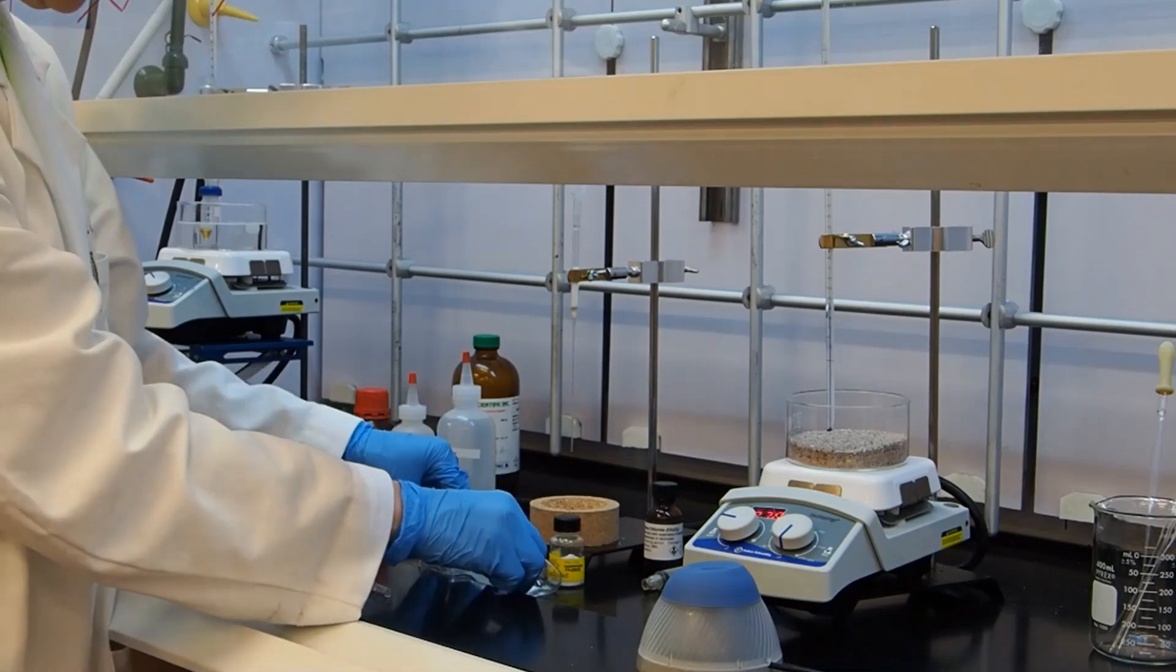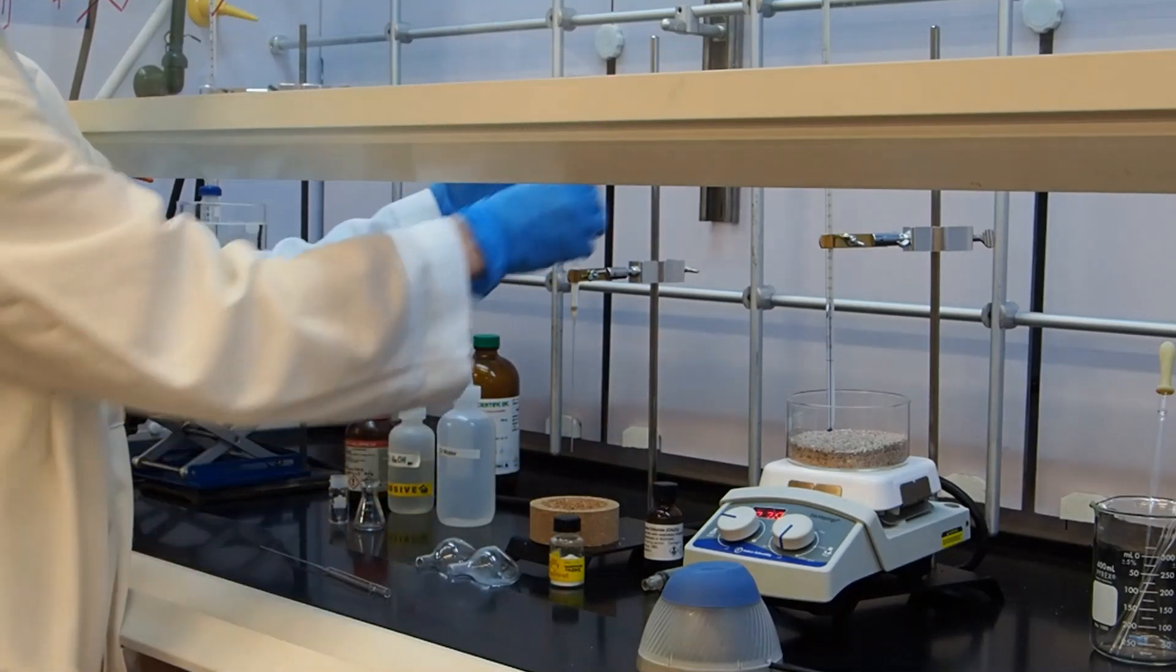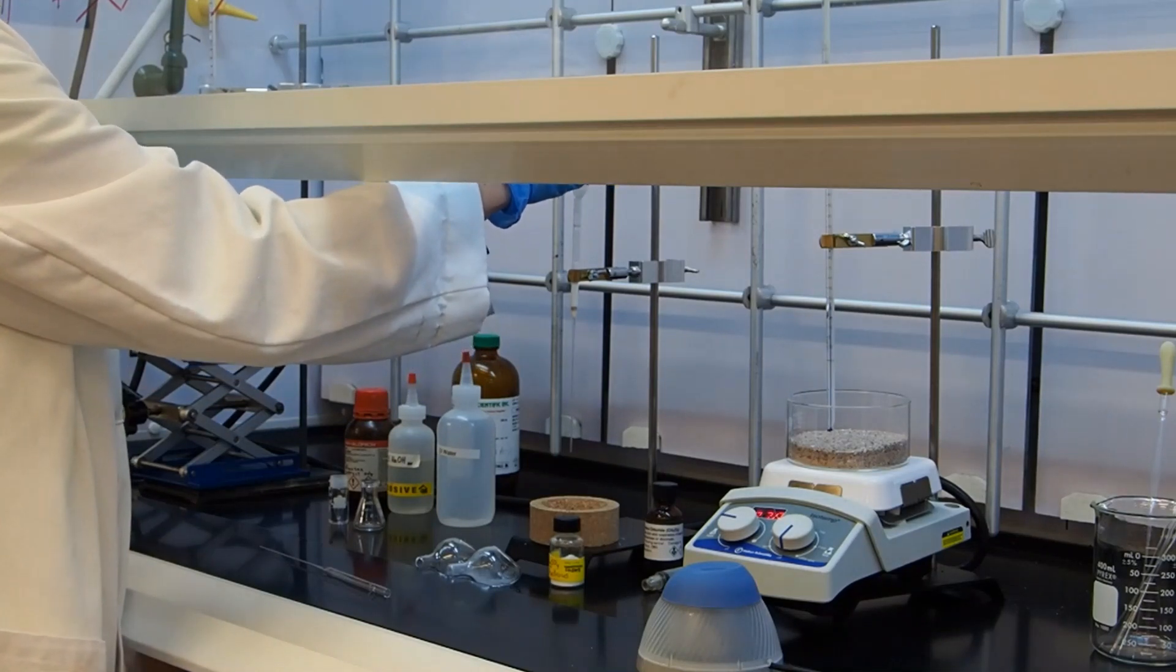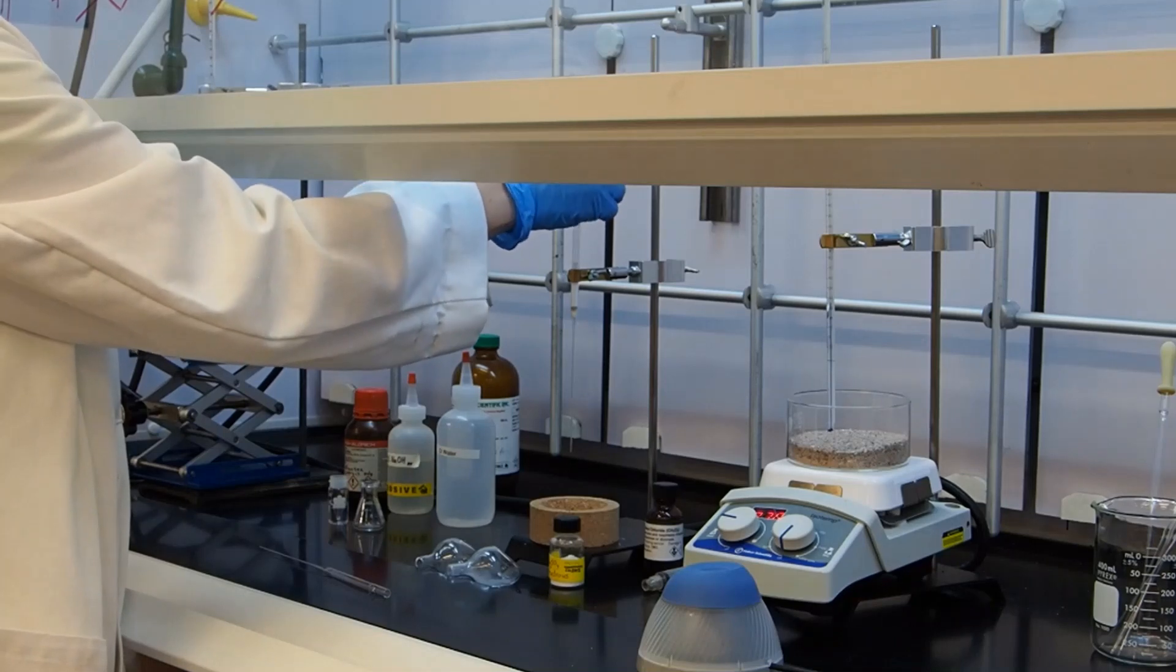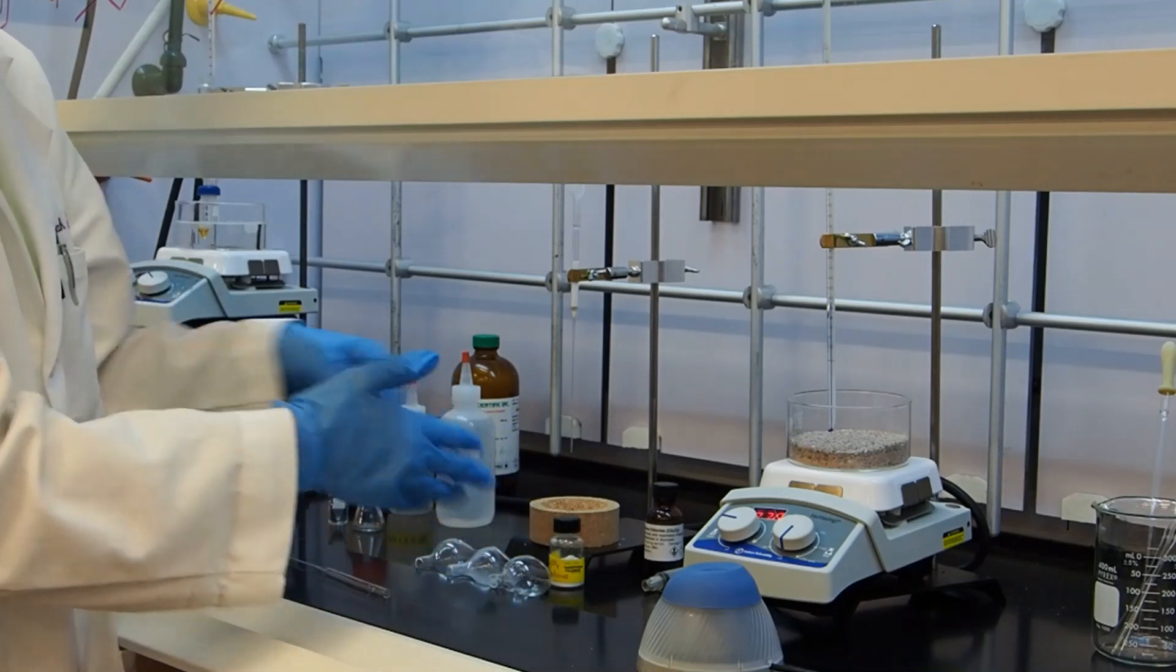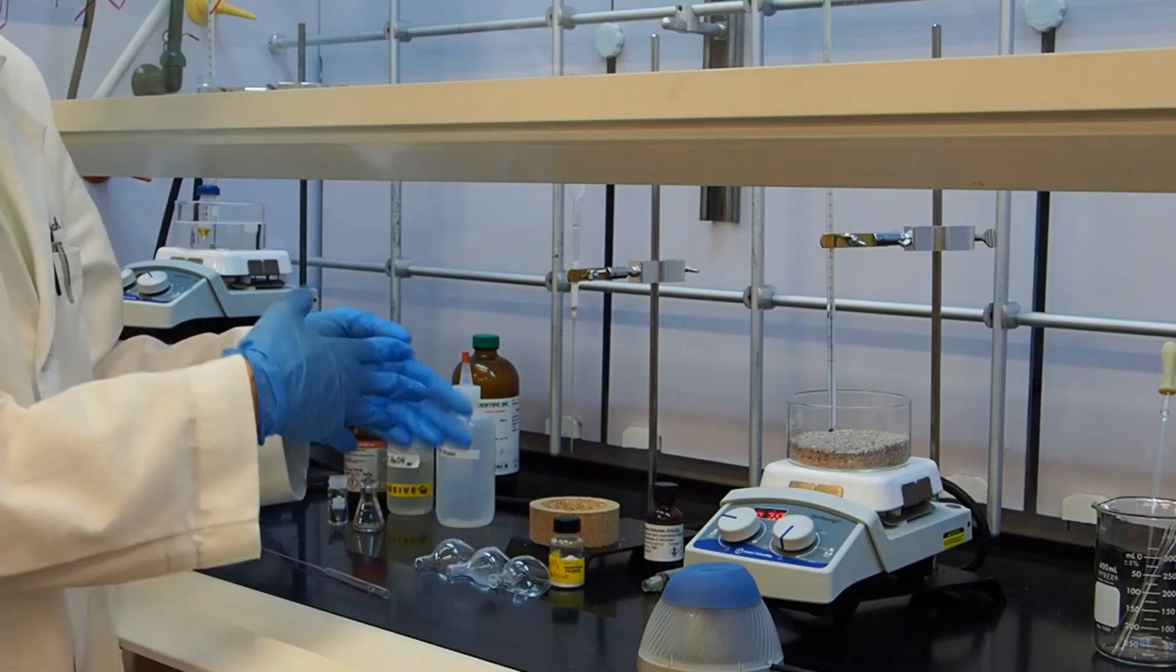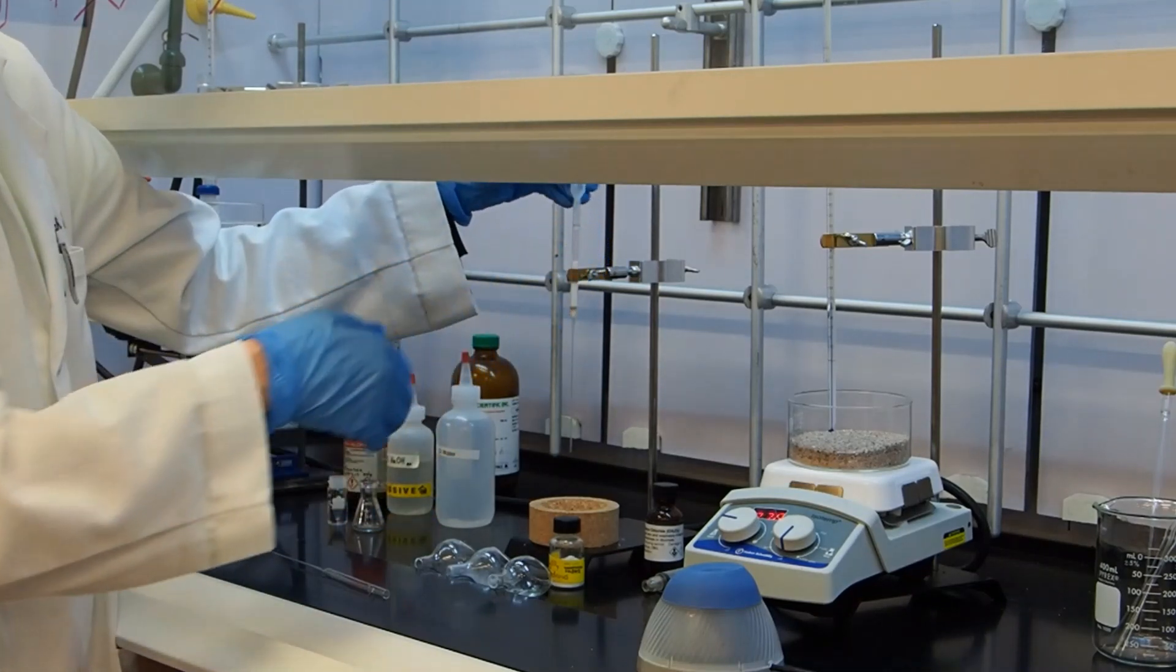The last thing to go on top is anhydrous sodium sulfate, about 50 milligrams. The purpose of this is to dry any of the solvent in the solution that we're pushing through the column. Normally you would add the sodium or magnesium sulfate separately and filter, so this is sort of a shortcut because we're doing this on such a small scale.